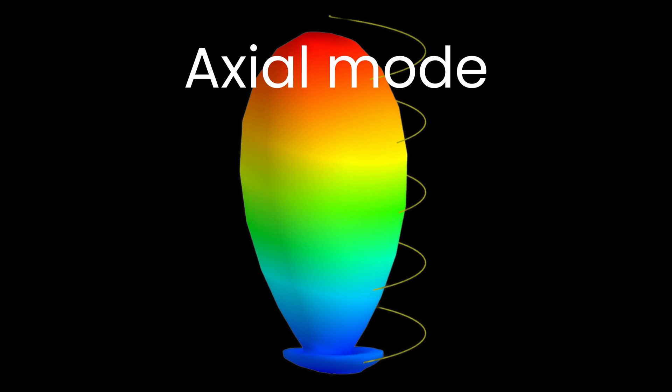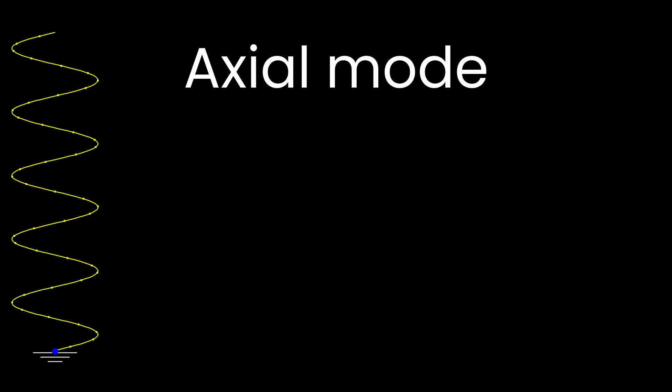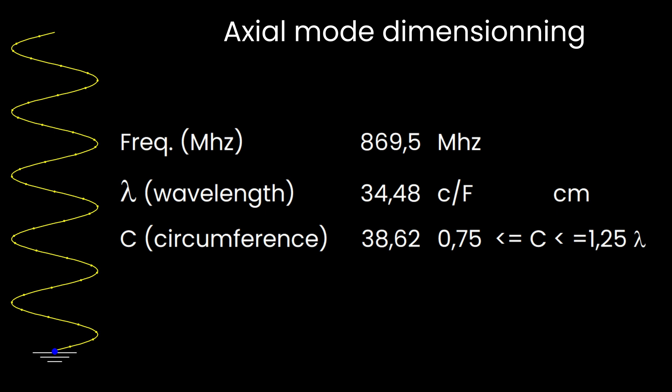To function in the axial mode, the antenna dimensions must follow certain formulas and empirical rules, or what we can also say observed best practices. Empirical rules for an axial mode antenna limits the circumference C between three quarters and one and a quarter of the wavelength lambda.